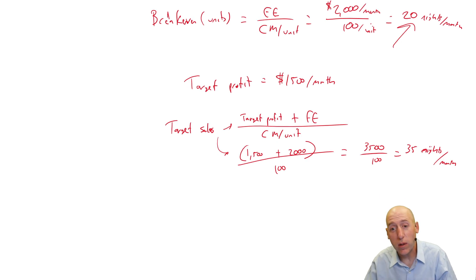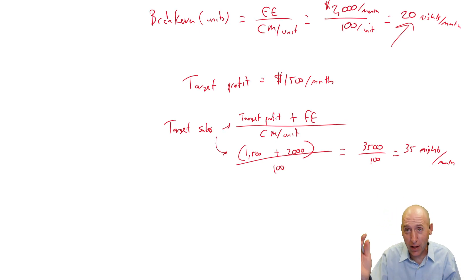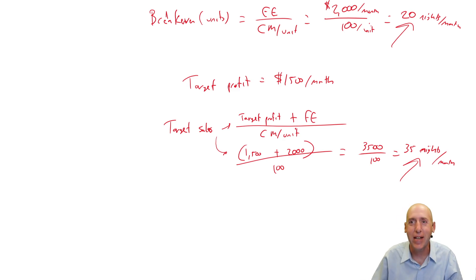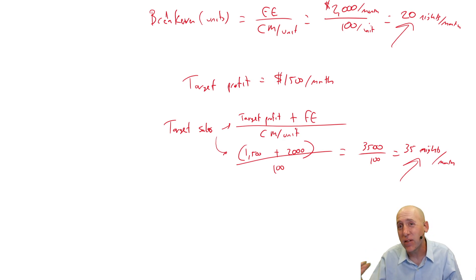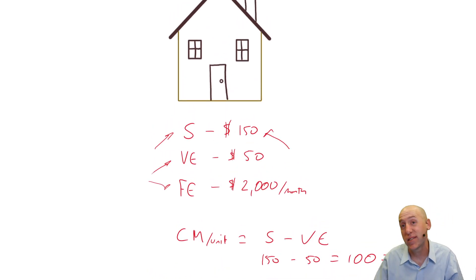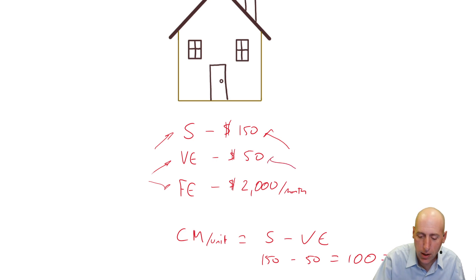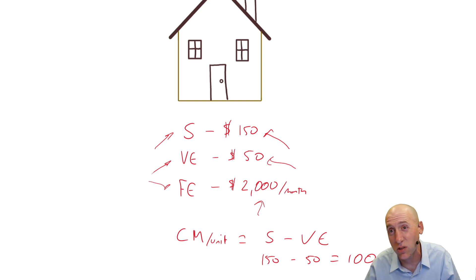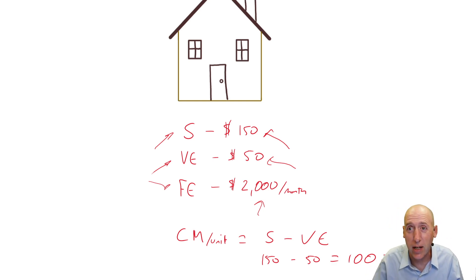Immediately, we both realized this does not pass the sniff test. There aren't 35 nights in a month — she'd have to rent at 120% of capacity to make her goal happen. So we had to revisit some of the underlying assumptions. She had to consider: maybe she needs to price higher, reduce some of the amenities to cut variable expenses, revisit fixed costs, or invest in a cheaper property with lower fixed costs or lower fees.